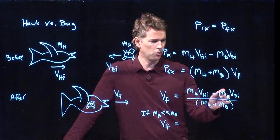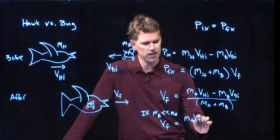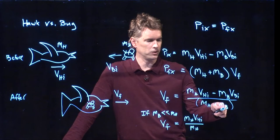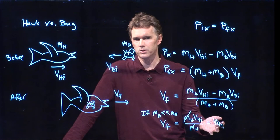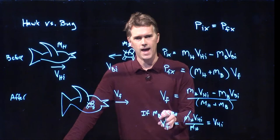And so we get m_h v_hi divided by m_h because we're going to ignore that term on the bottom and we're going to ignore this term on the top. The m's now cancel out and we get v_hi. The hawk doesn't change its speed. If it's moving at v_hi before, it's still moving at v_hi after.